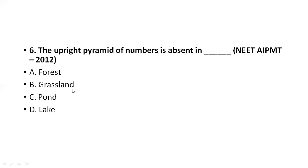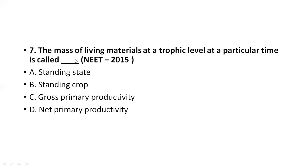The upright pyramid of numbers is absent in forests — you cannot see the upright pyramid of numbers in a forest. Next: the mass of living material at a trophic level at a particular time — this is the standard definition for standing crop. The mass of living material at a trophic level at a particular time is called standing crop.